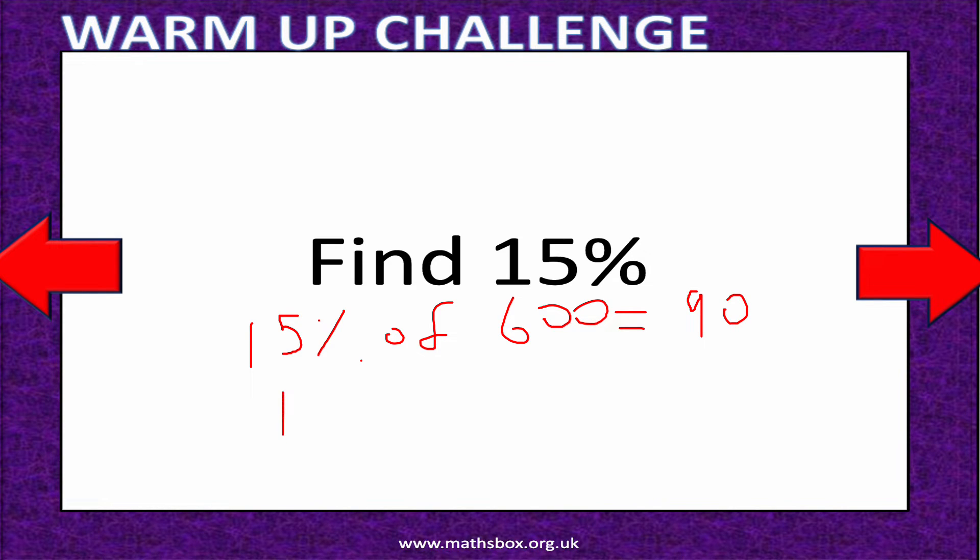Just to be very clear: 10% equals 60, and 5% is half of 10%, which is half of 60, so 5% equals 30. 10% plus 5% equals 15%, so 60 plus 30 equals 90.